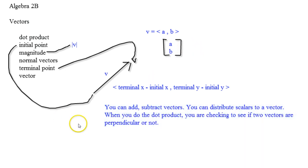Now here's some cool stuff you can do with vectors. You can add and subtract vectors. You can distribute scalars to vectors, in other words, make them bigger or smaller. And when you do the dot product, you are checking to see if two vectors are perpendicular or not.